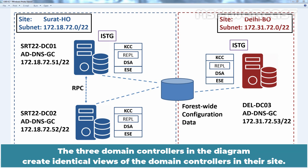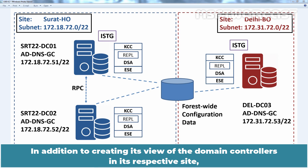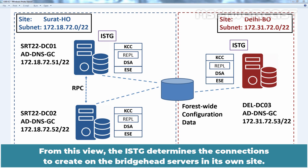The domain controllers in the diagram create identical views of the domain controllers in their site. They also generate connection objects based on the current state of Active Directory data in the Configuration Directory partition. In addition to creating its view of domain controllers in its respective site, the KCC that operates as the ISTG in each site also creates a view of all servers in all sites in the forest. From this view, the ISTG determines the connections to create on the Bridgehead servers in its own site.